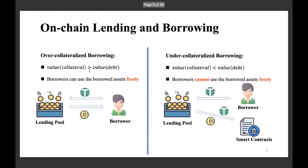There are two types of borrowing. First, overcollateralized borrowing, where borrowers need to collateralize more assets than the assets they borrow, and they can use the borrowed assets freely. The second is undercollateralized borrowing, where the amount of collateral is less than the amount of debt. However, borrowers cannot use the borrowed assets freely — the ways to use the collateralized assets are fixed or predefined by, for example, the lending pool or smart contracts.